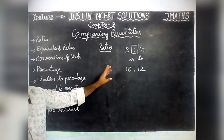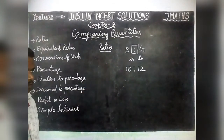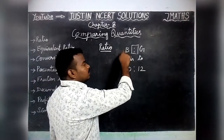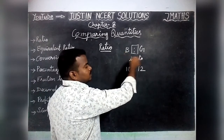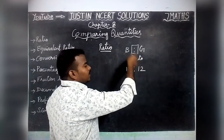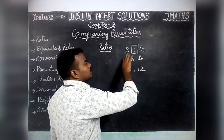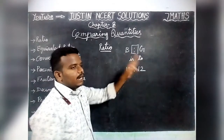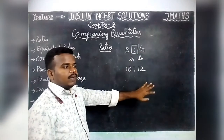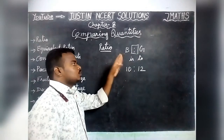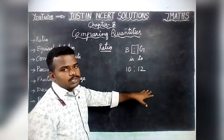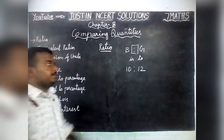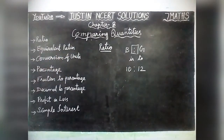When we are comparing two quantities, definitely the quantities should be in the same unit. For example, here we are comparing students — we have to compare students and students only. We cannot compare students and animals, or students and fruits. So the units should be in the same unit.